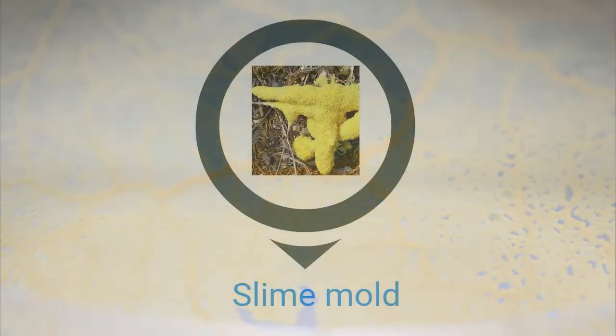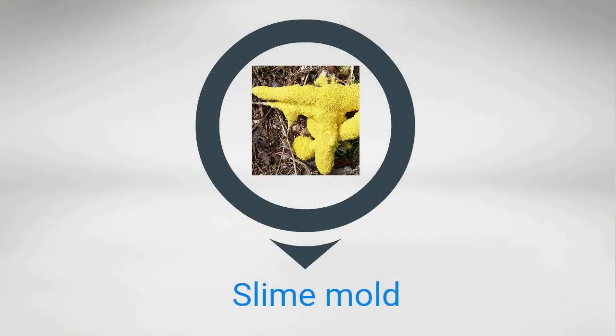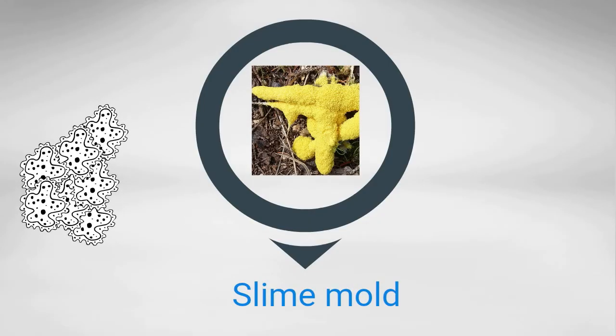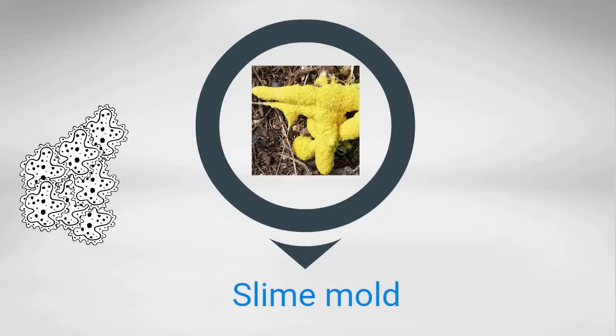Another interesting trait is that some slime molds are formed when individual cells swarm together and fuse. The result is one large bag of cytoplasm with many nuclei.